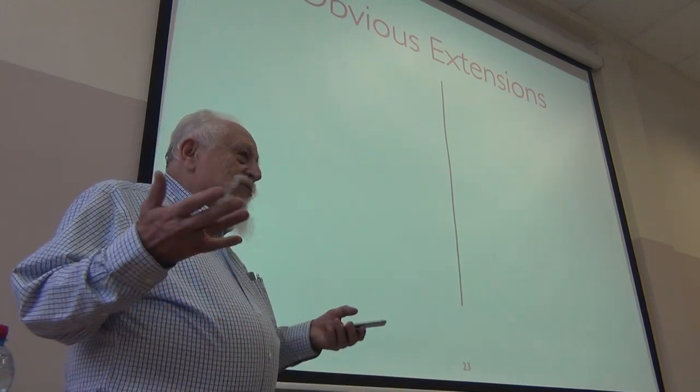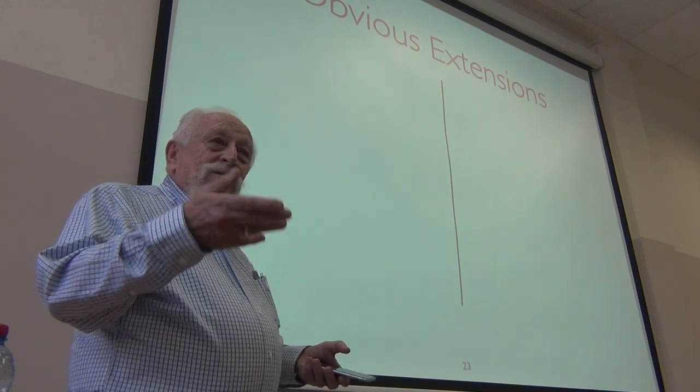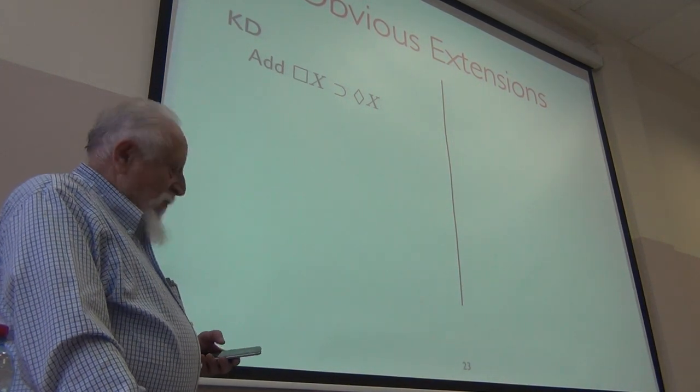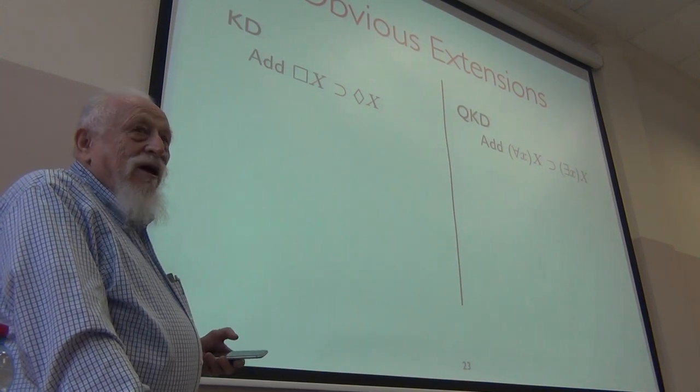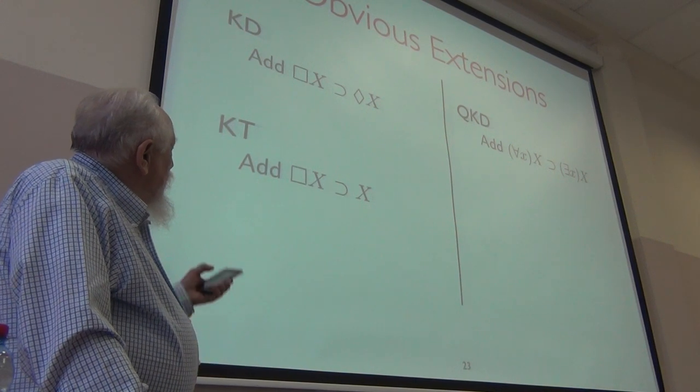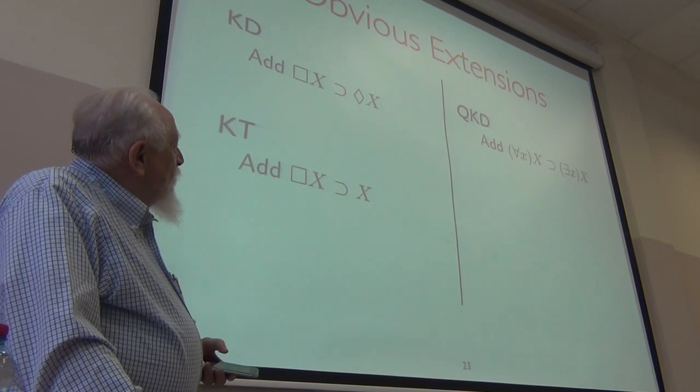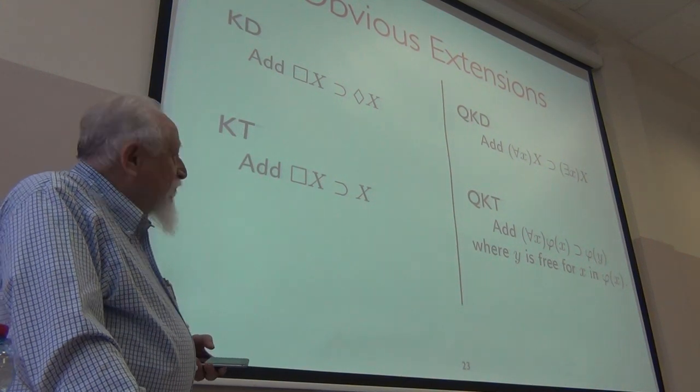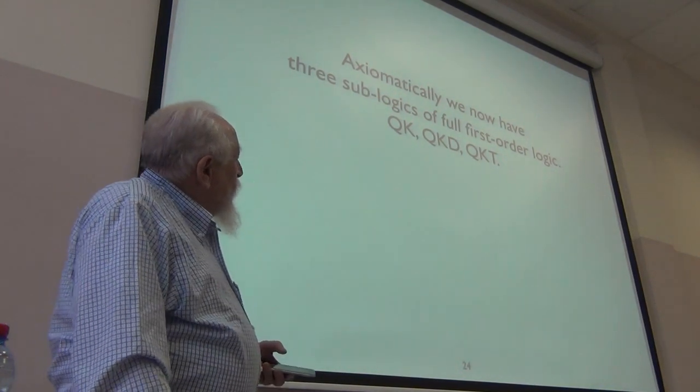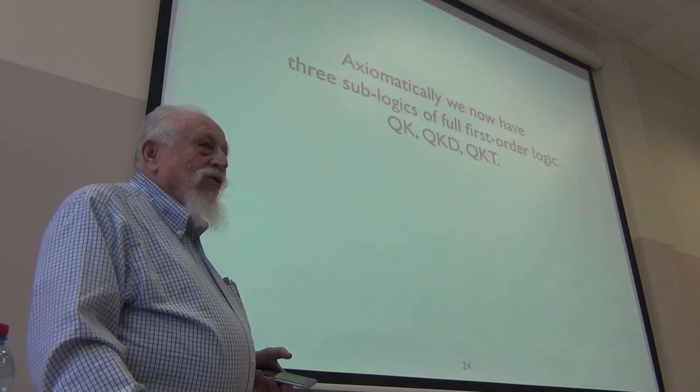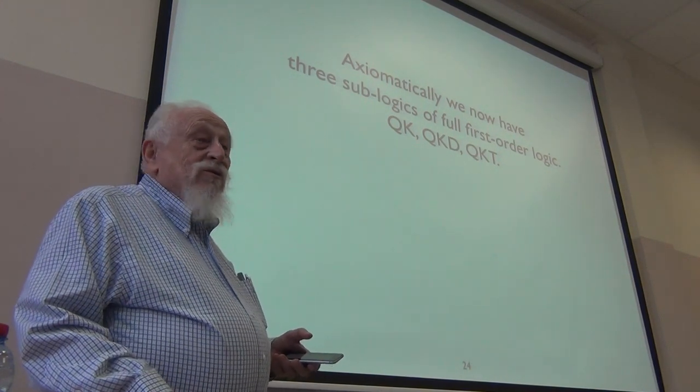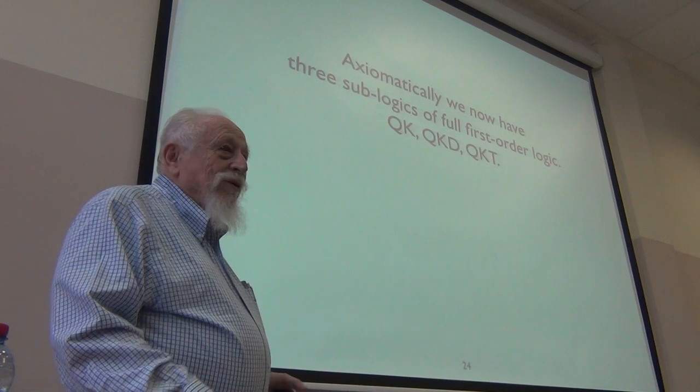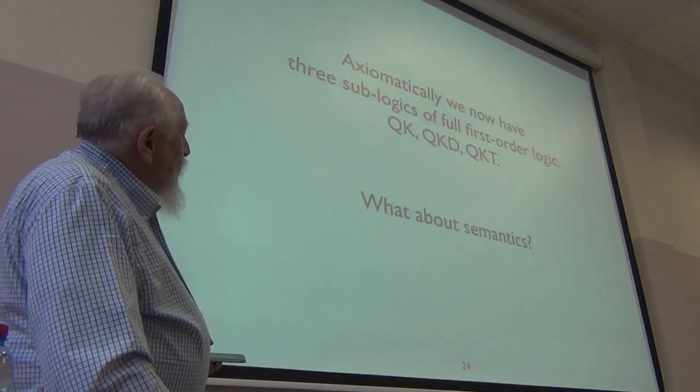Okay, but before we get to semantics, there are some obvious extensions because as you start with modal k, you can build it up to d, to t, to k4, and so on. So, some extensions here. KD is box implies diamond. So QD will be for all implies exists added to QK. KT is box x implies x. QKT is instantiation for all x phi of x implies phi of anything that's free for x. And axiomatically what we've got now is three subsystems of classical logic, except we know they are subsystems, we don't know these are proper yet, that QK is different than QKD and so on. For that, we need to be able to prove some unproveability results.